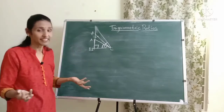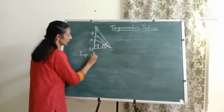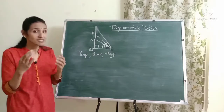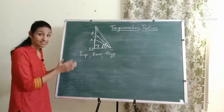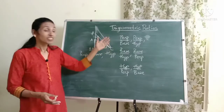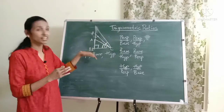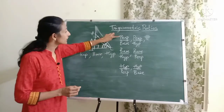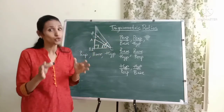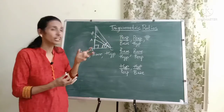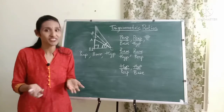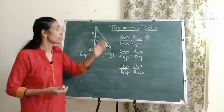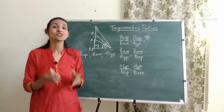There are three sides in a right angle triangle: the perpendicular (P), the base (B), and the hypotenuse (H). For these three sides, there are six possible combinations when you divide any two sides. These are called ratios because you're dividing two lengths — the units cancel and you get a pure number. Since they're all related to a right angle triangle, they are known as trigonometric ratios. So we have six trigonometric ratios.